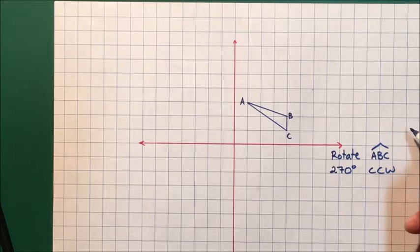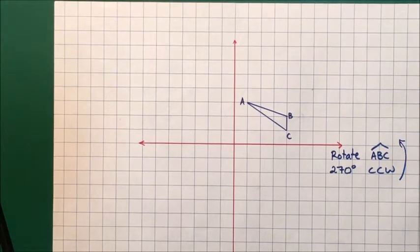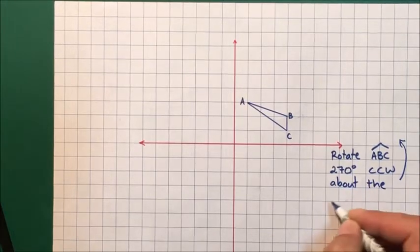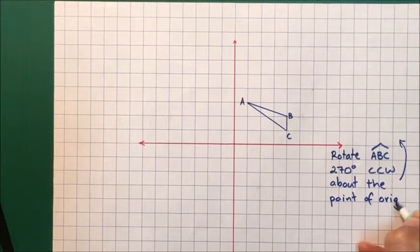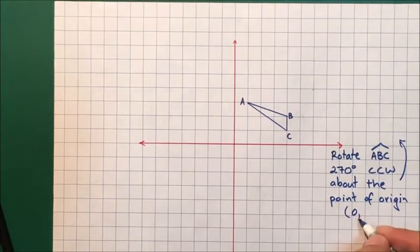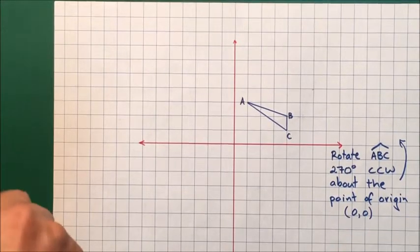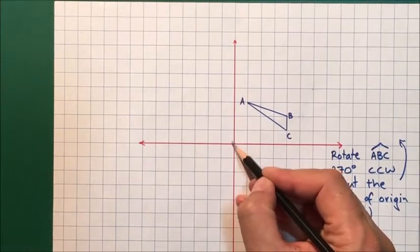A clock's arms go this way, so counterclockwise will be going that way. 270 degrees counterclockwise about the point of origin. The point of origin, just in case you've forgotten, is (0,0). Let's get the job done. (0,0) is here, so this is going to